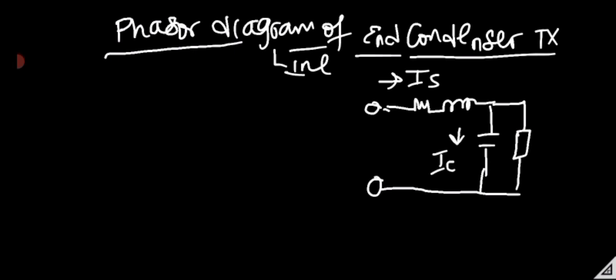The current flowing through the capacitance is IC, and the receiving-end current is IR. The voltage at the sending end is VS, and the voltage at the receiving end is VR. We can now draw the phasor diagram for the end condenser model, noting the resistance and inductance components represented as Z.